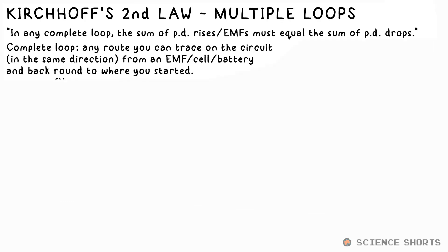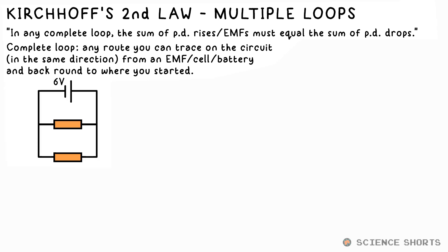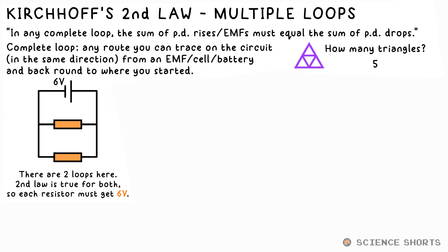So fairly easy stuff so far, but it's when we start thinking about circuits with junctions that things start to ramp up. Here's a simple parallel circuit. You probably know that the PD across each resistor is going to be 6 volts, but let's think about the whole closed loop part of the second law. You ever see those puzzles — how many triangles can you see? How many loops with an EMF can you see here? Hopefully you said two — here's one and here's the other. We can treat them separately when thinking about the second law.